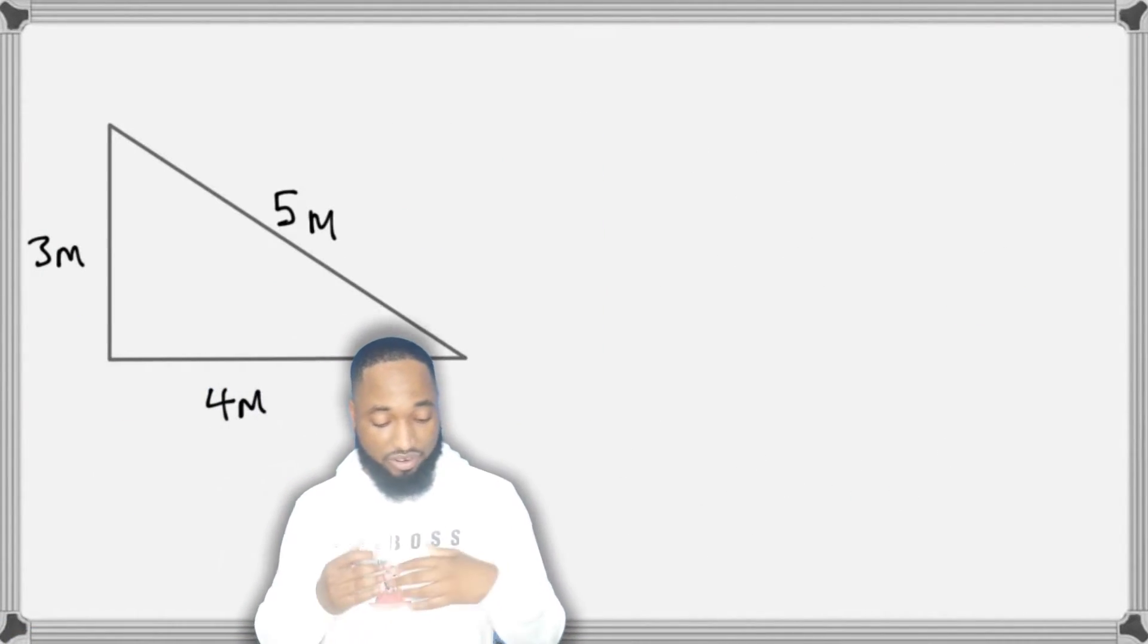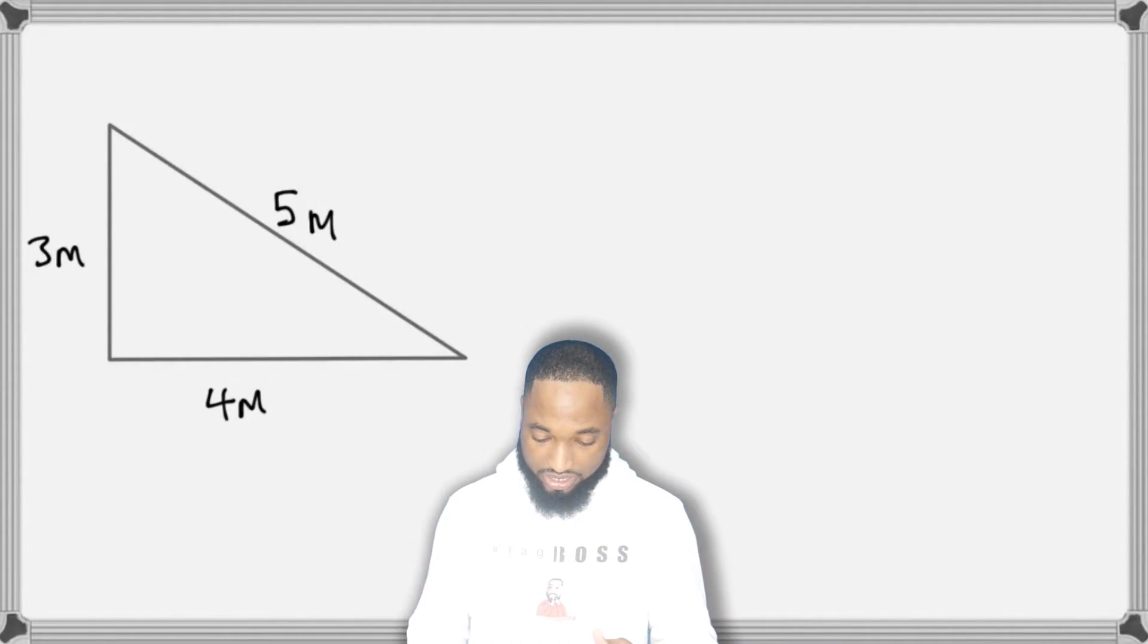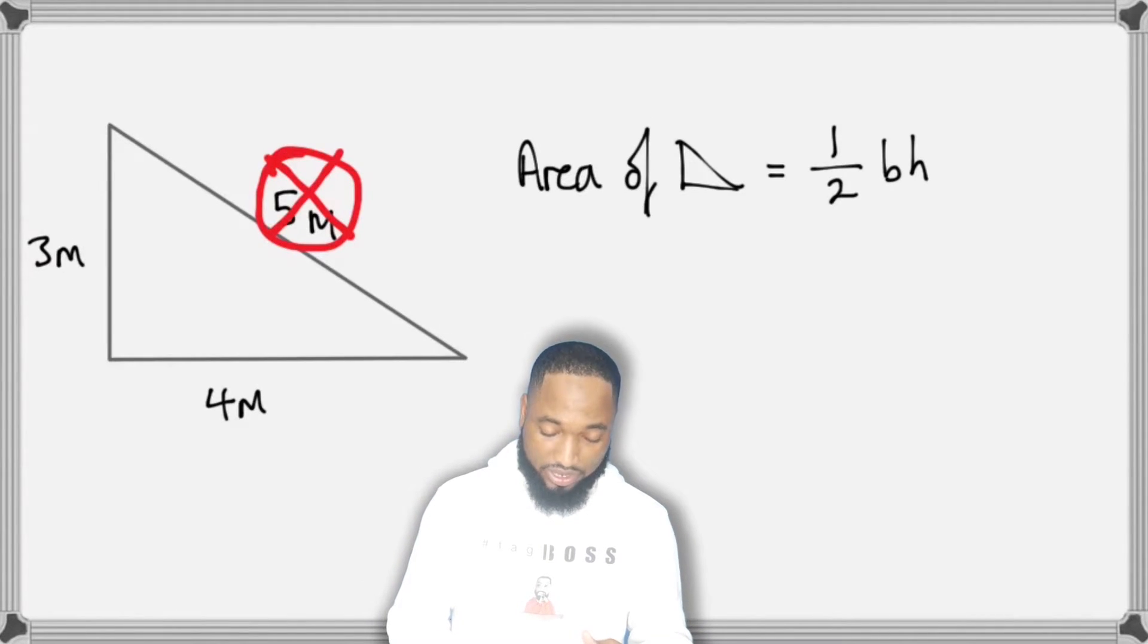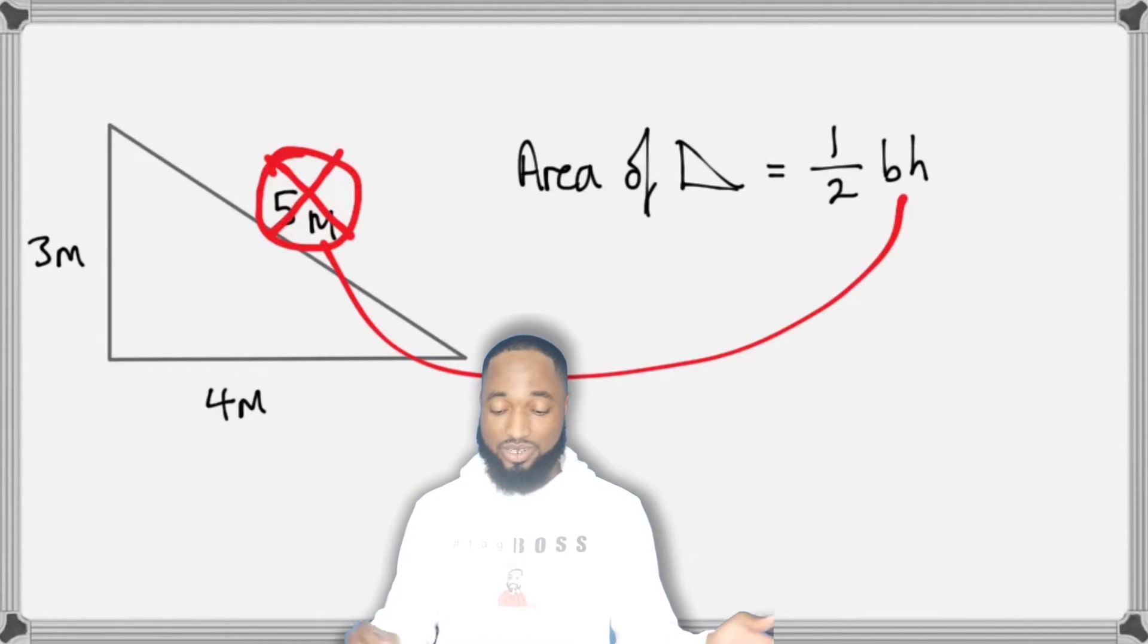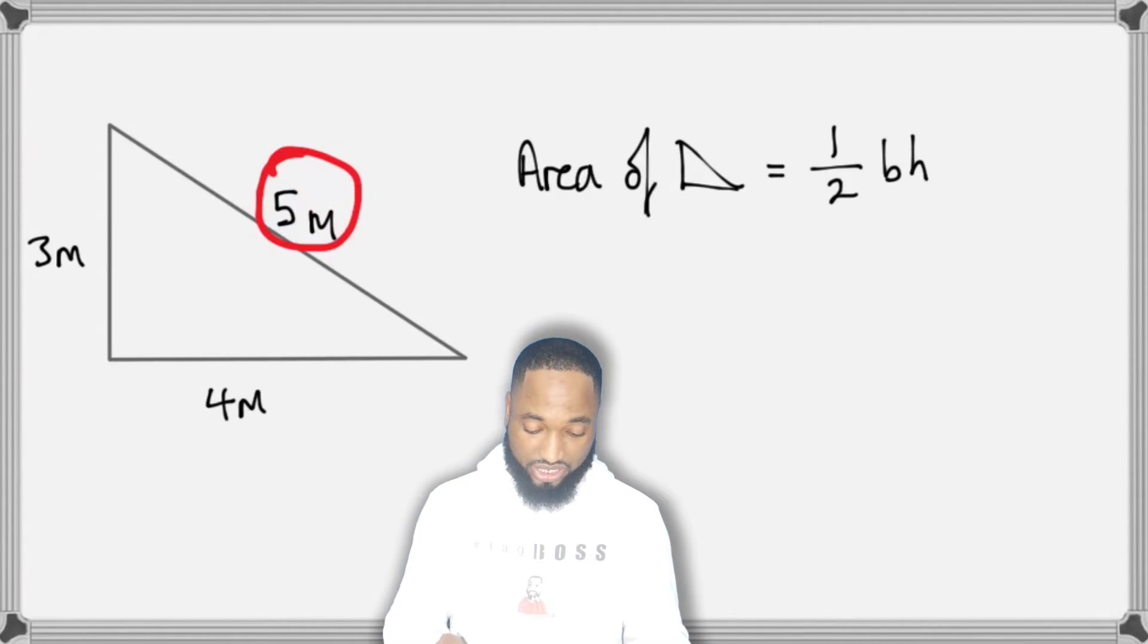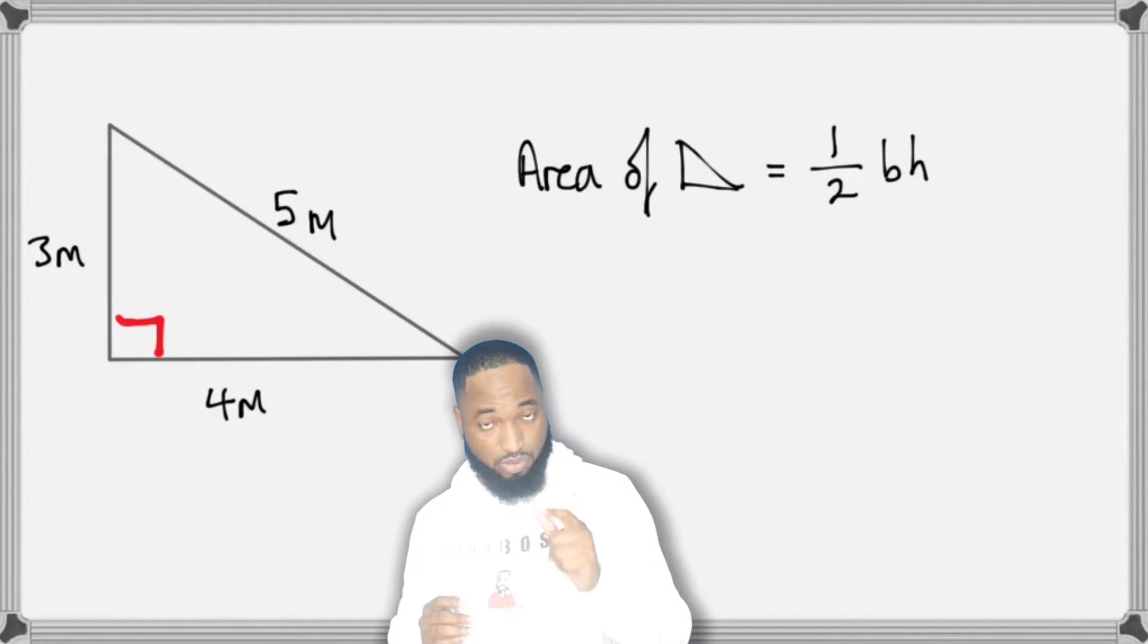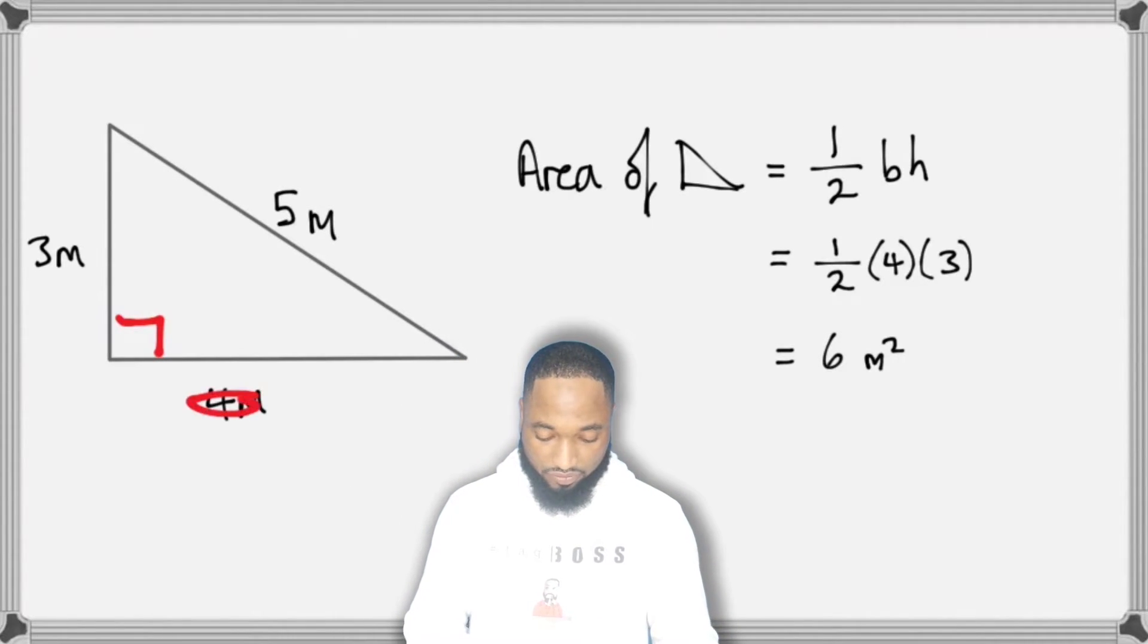So if I wanted to find the area of this triangle over here, I would have to consider the area of the triangle is equal to half the base by the height. Now you notice this five here. A lot of people, there's a rookie mistake, will use this five in the formula for maybe something, the base or the height. This five is not the base or the height. So the height must always be perpendicular to the base. Pro tip. So area of the triangle is half base by height, half of four by three. Your answer is six.